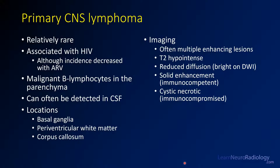This is a case of primary CNS lymphoma. It's a relatively rare disorder with a relatively dismal prognosis. It's associated with HIV, although the incidence is decreasing with better HIV treatment. Most commonly it's a B-cell lymphoma that directly invades the parenchyma. Often, a lumbar puncture will yield malignant cells in the CSF. Common locations include the basal ganglia and periventricular white matter, as seen in this case.